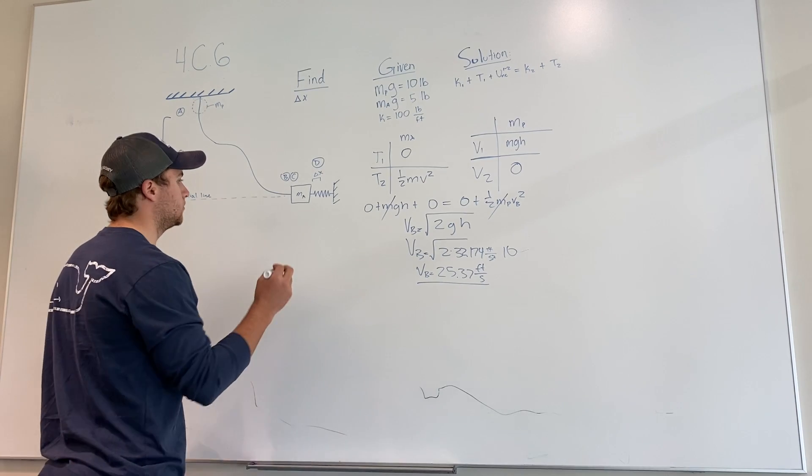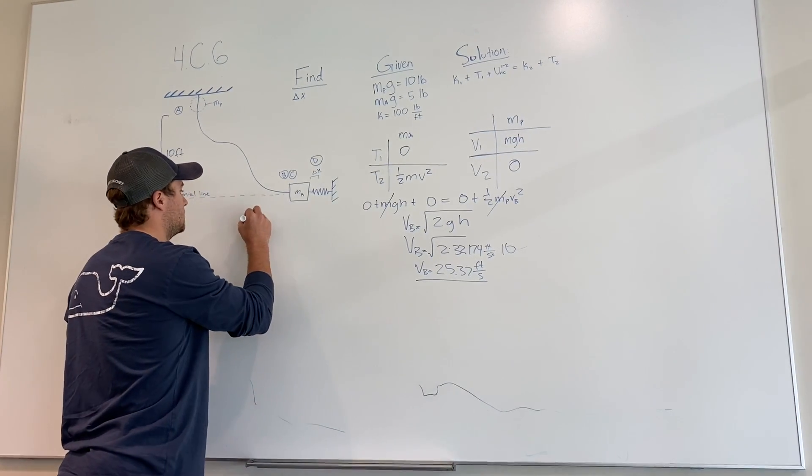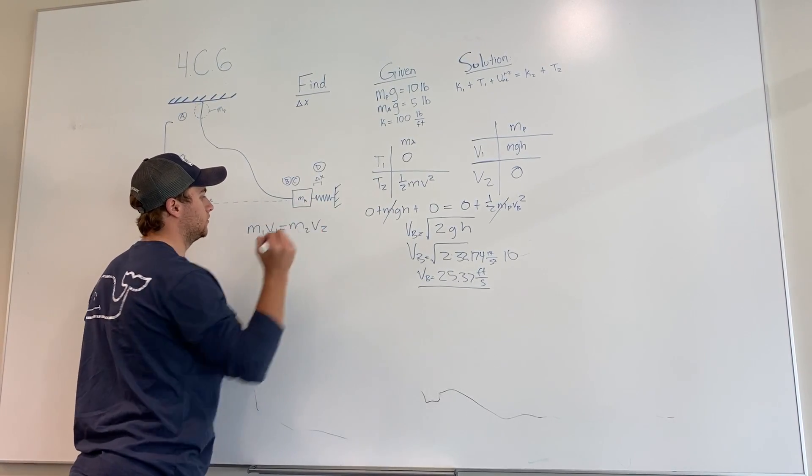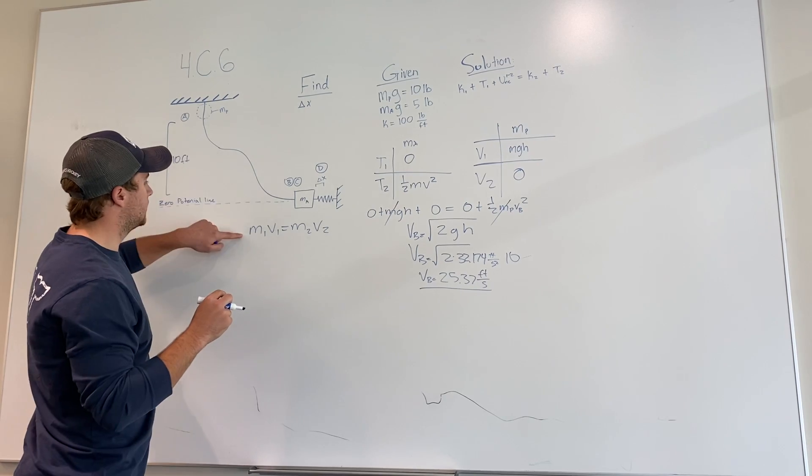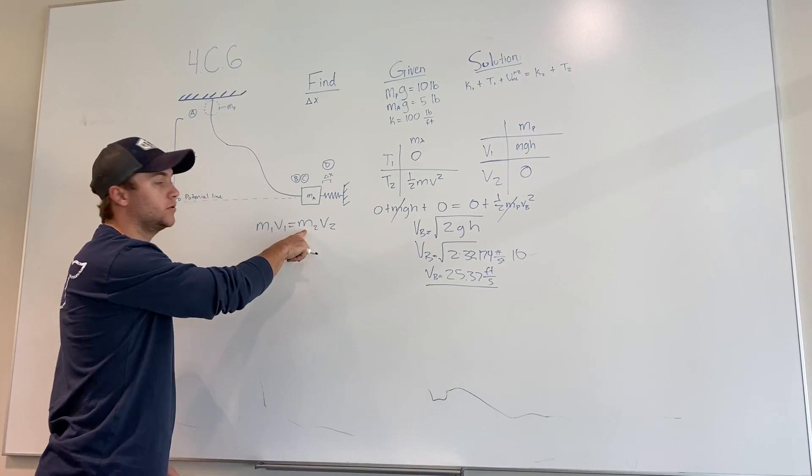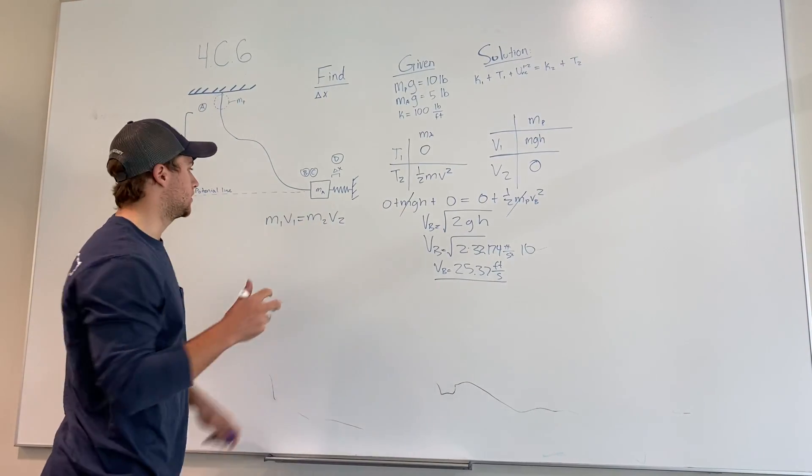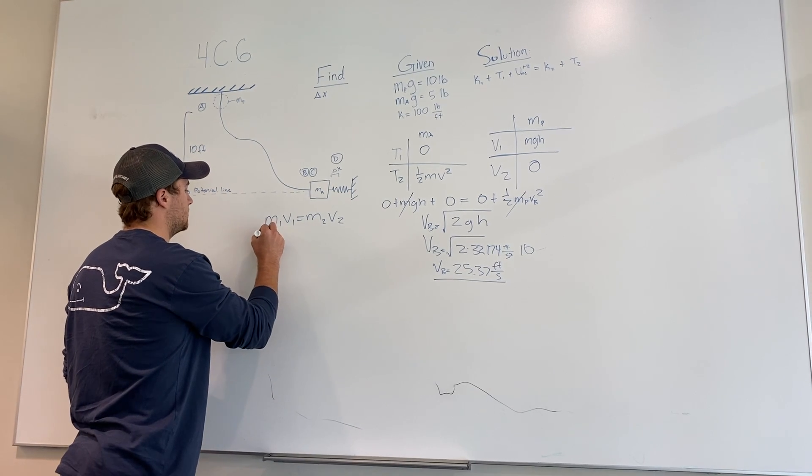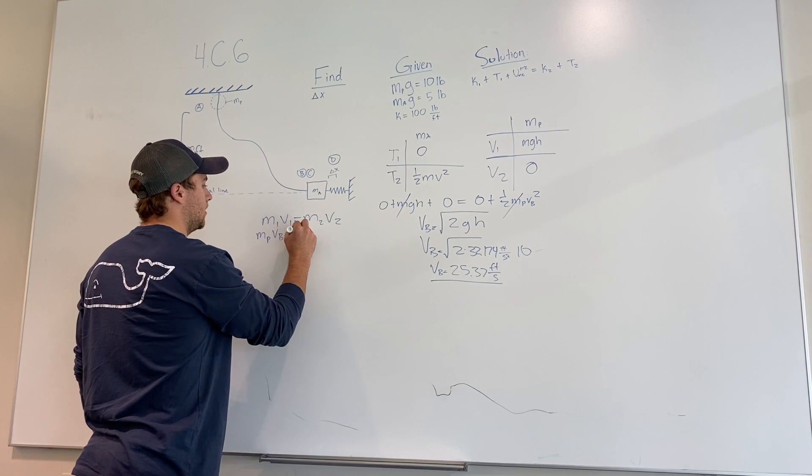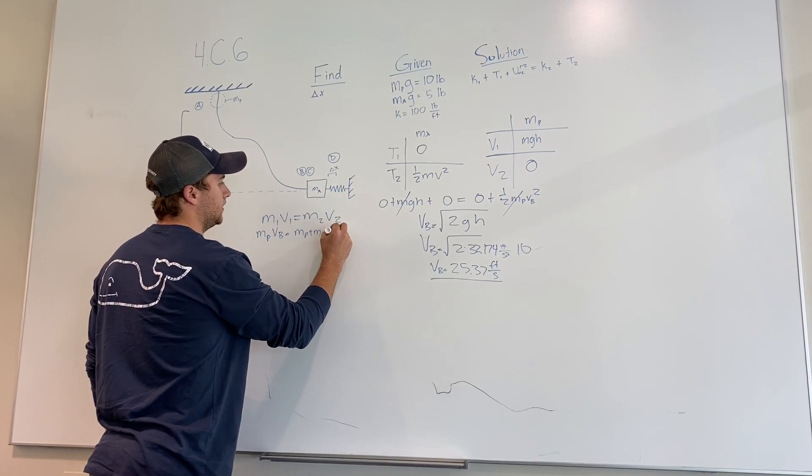So using this velocity, we can combine those two using the impact formula. So that's M1 V1 equals M2 V2. Mass 1 is mass P, V1 is this VB. Mass 2 is the mass A plus mass P, and V2 is what we're trying to find.